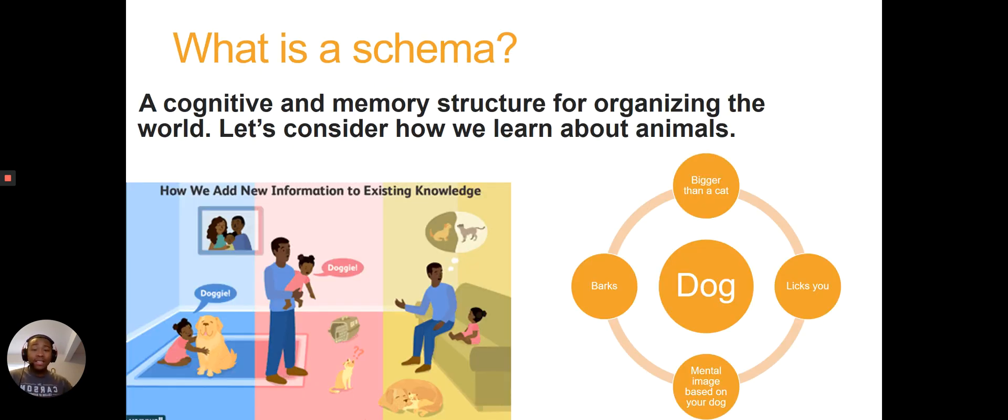So the first thing I want to talk about is what is a schema. A schema is a cognitive—so brain, mental—and memory structure for organizing the world. This is the way that we as humans come to learn about the world and organize what we know about the world. And if we think about the example of how we learn about animals, the first time you ever saw a new animal, you didn't instantly just say 'oh, that's a giraffe or that's an elephant.' There was a process.